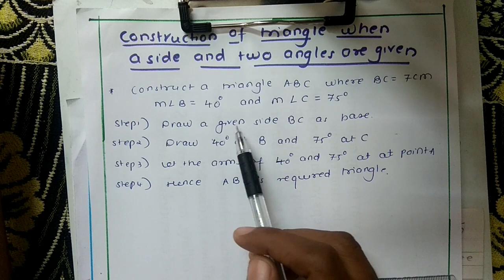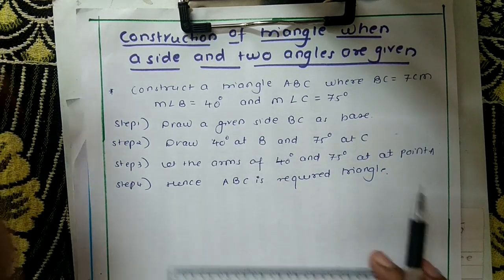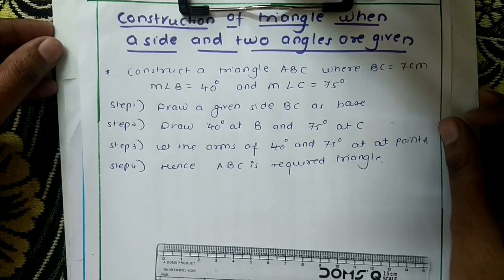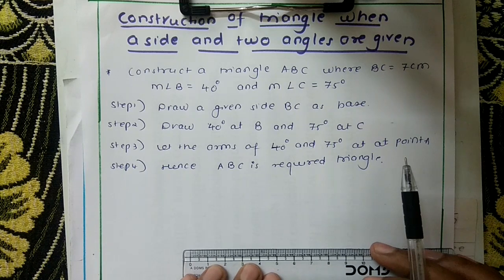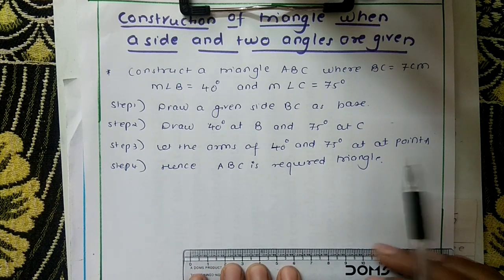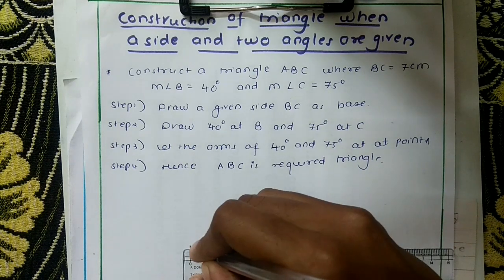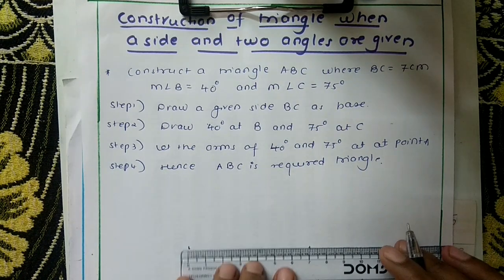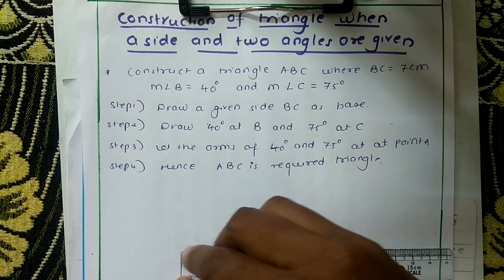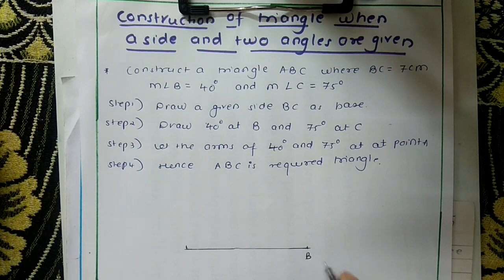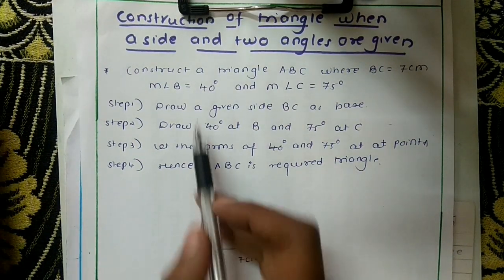Let us start. Draw the given side BC as base because only one side is given. Draw 7 centimeters here. You can name here B and here C. This is 7 centimeters.